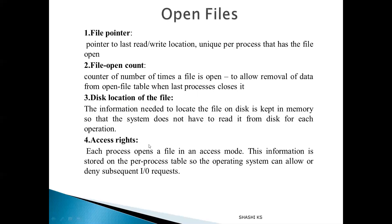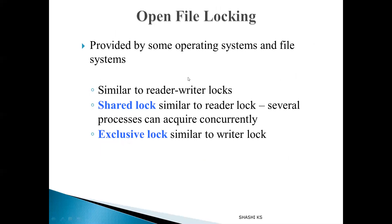The fourth piece of information is access rights. Every process is allowed to open a file in a particular access mode, and the access rights information records what type of access that process has. If the process tries to use the file in some other mode, the OS can allow or deny it based on the access rights. Some operating systems also provide file locking facilities — processes can get shared locks for simultaneous reading, or exclusive locks for writing to a file.